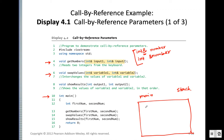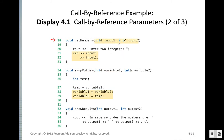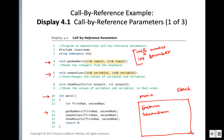For the main function, memory allocation is created for variables like first_num and second_num. When the function get_numbers is called, because we are using call by reference, it does not create separate memory allocations for input_one or input_two — it gets the actual memory allocation of first_num and second_num.